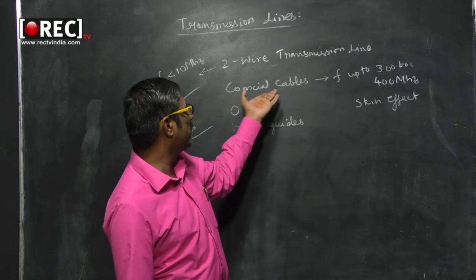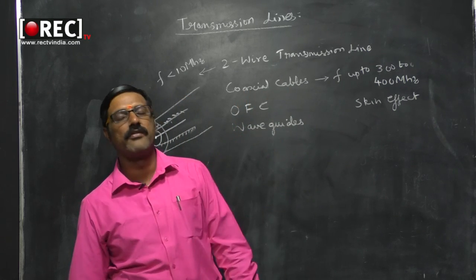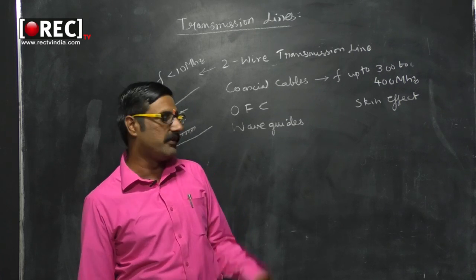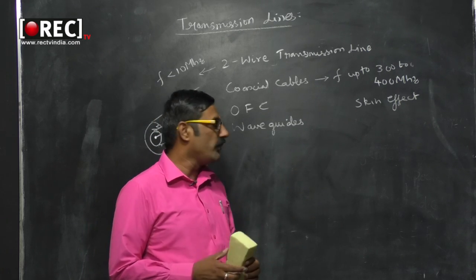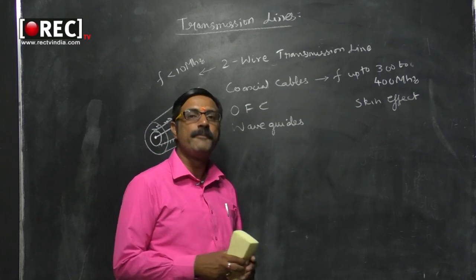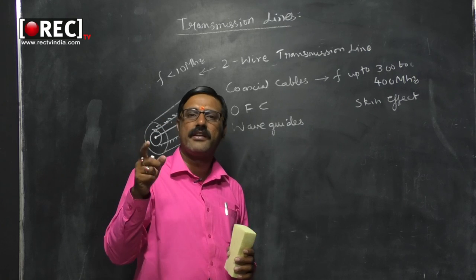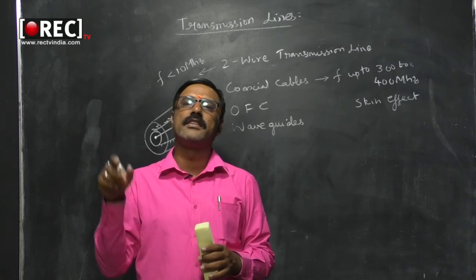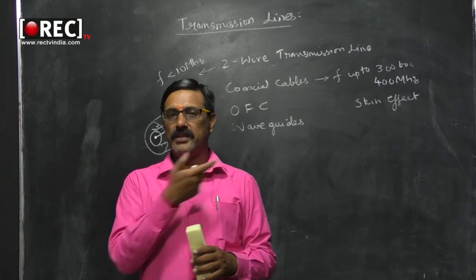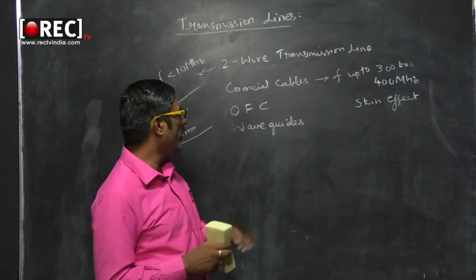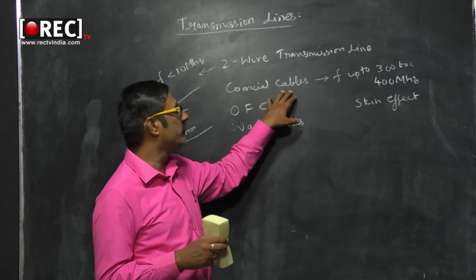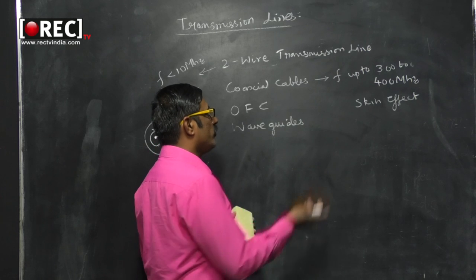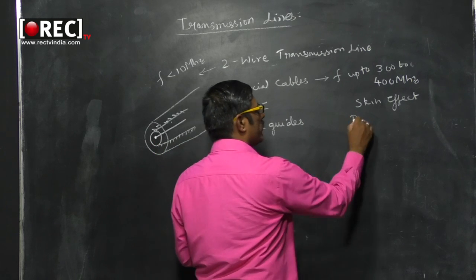Coaxial cables are generally used in TV transmission in day-to-day life — for example, from the dish antenna to the TV set. They are also useful in probes connecting CROs and for TV transmission and reception.